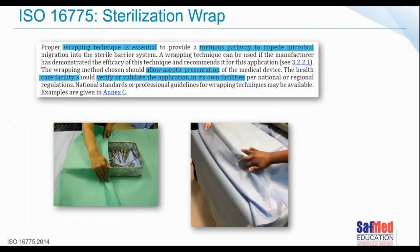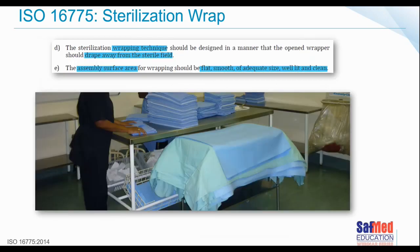Proper wrapping technique is essential to provide a tortuous pathway to impede microbial migration into the sterile barrier system. We want to make sure we don't get an ingress of microorganisms, and how we wrap things matters. The wrapping method should allow for aseptic presentation — that you can open it in a manner that the devices stay sterile. The healthcare facility should verify or validate the application in its own facilities. Hence why we need a validation plan.